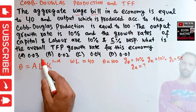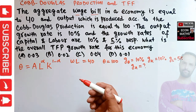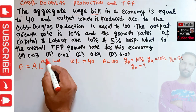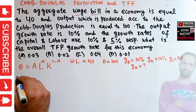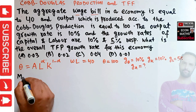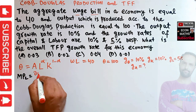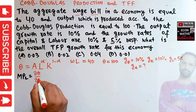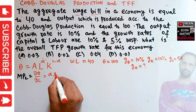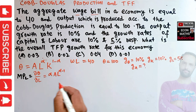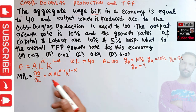We just need to find out the value of alpha. We know the sum of the exponents in this Cobb-Douglas production function must equal 1 because it gives us constant returns to scale. To find the value of alpha, let's find out the marginal product of labor — the partial derivative of our production function with respect to L. Taking the derivative with respect to L, the exponent of L becomes a coefficient, so we have alpha times A times L to the power alpha minus 1 times K to the power 1 minus alpha.